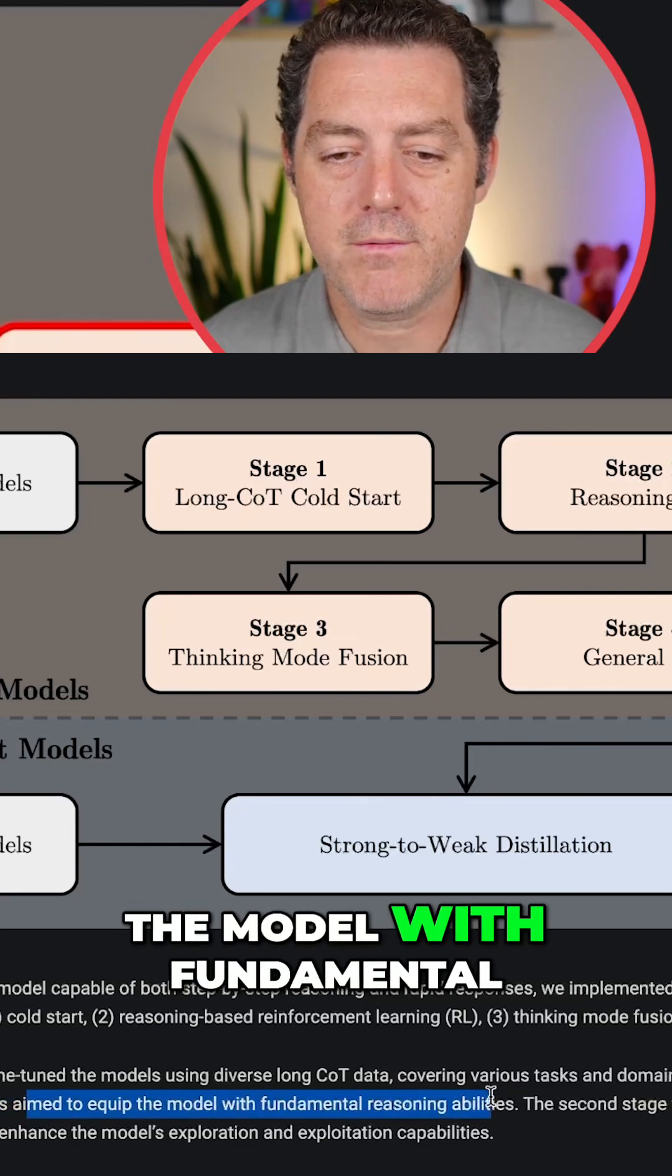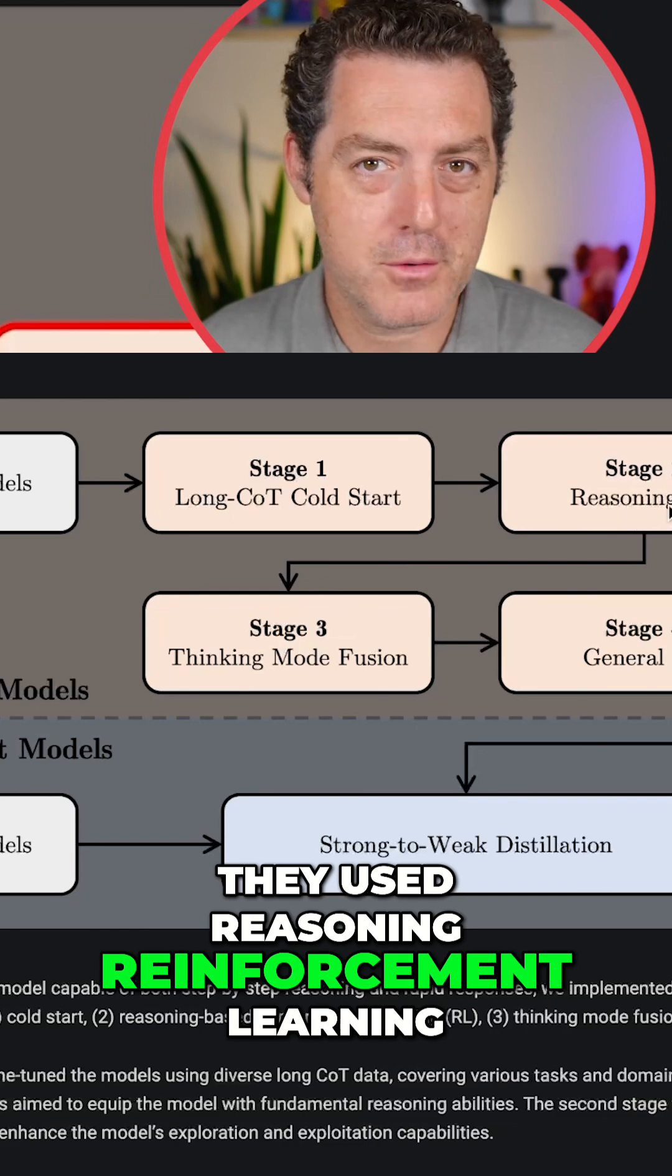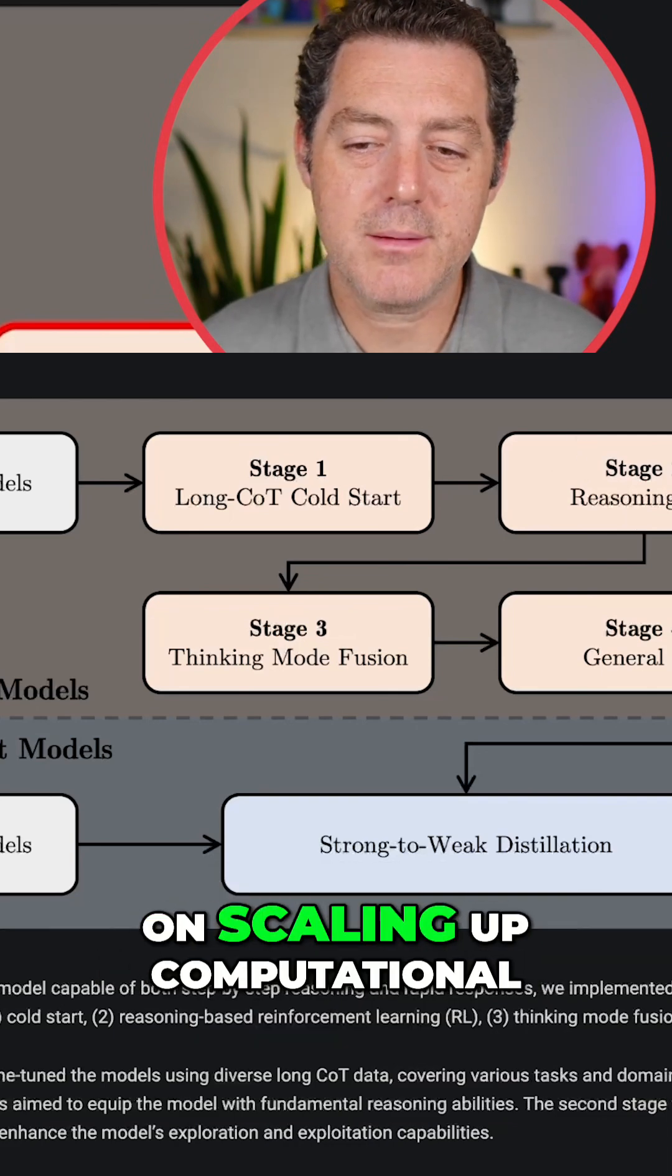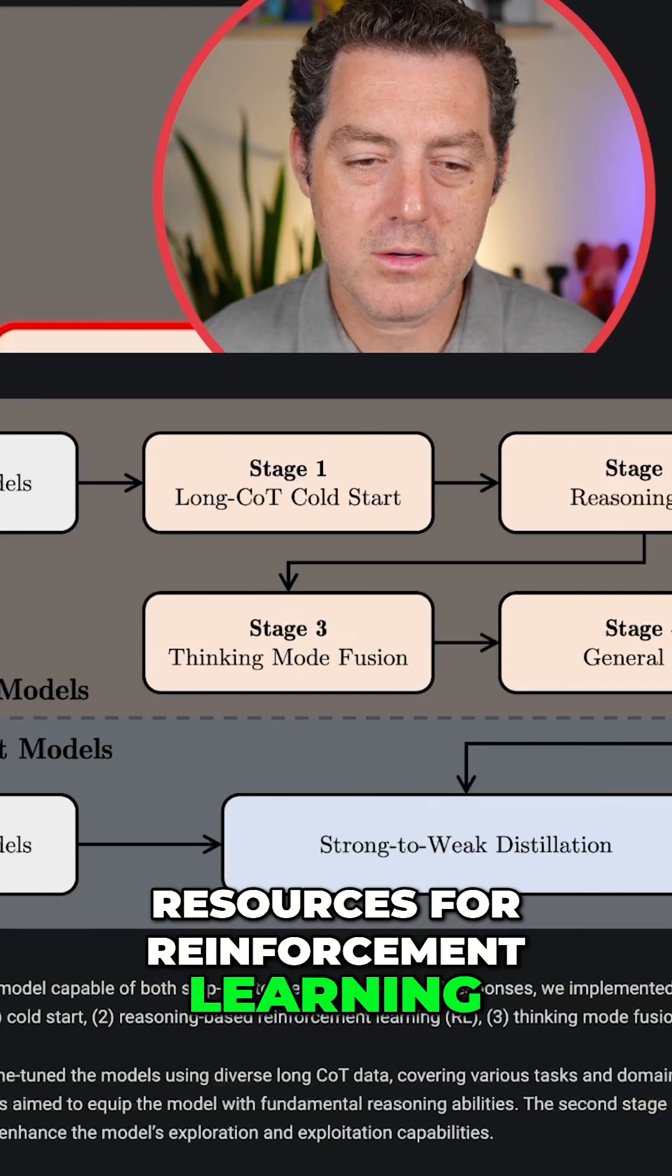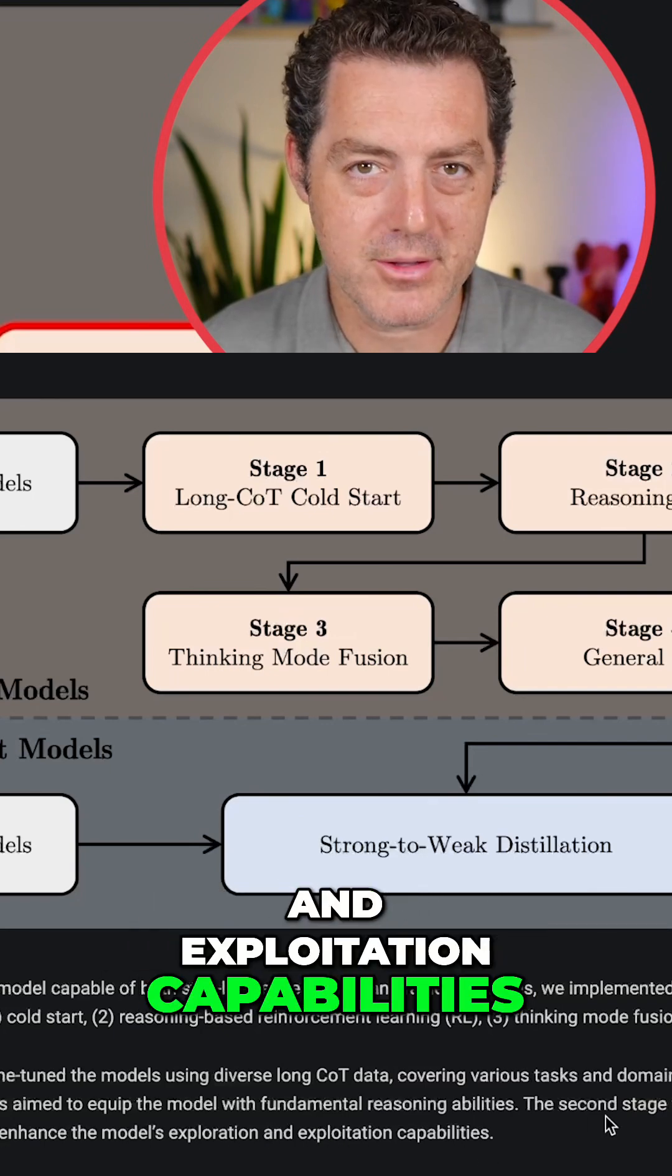And all of this was aimed to equip the model with fundamental reasoning abilities. Then they used reasoning reinforcement learning, what we've seen before. The second stage focused on scaling up computational resources for reinforcement learning, utilizing rule-based rewards to enhance the model's exploration and exploitation capabilities.